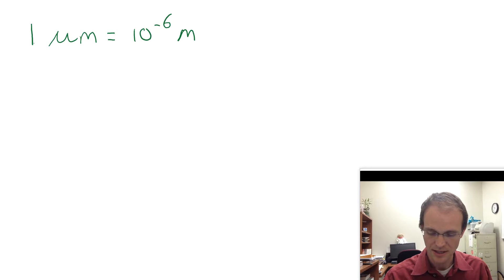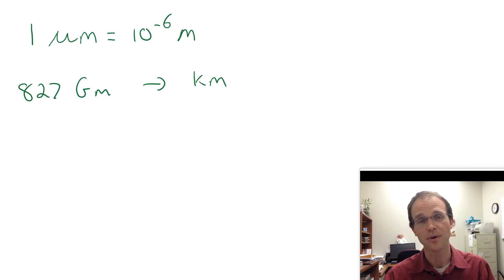The kind of problem we're going to be working today is what happens if somebody asks us, say we've got 827 gigameters, and we want to convert that to kilometers. So there's a problem. We've got one unit prefix to another unit prefix. Now you can look at those unit prefixes and be like, well, giga is 10 to the ninth, kilo is 10 to the third, so they're about 10 to the sixth apart, and do it like that.